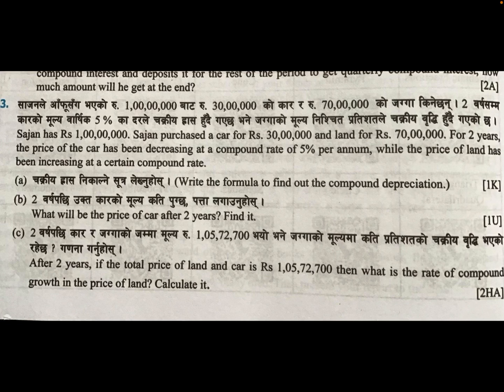Dear students, today I am going to teach you one question related to the SCE model question. This is equation number three, a model question issued by CDC. The sergeant has rupees one crore. The sergeant purchased a car for rupees 30 lakh and land for rupees 70 lakh, totaling one crore, for two years. The price of the car has been decreasing at a compound rate of 5% per annum, while the price of the land has been increasing at a certain compound rate.